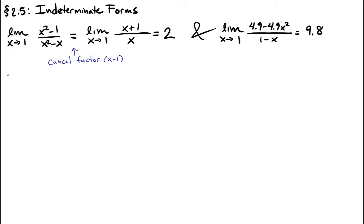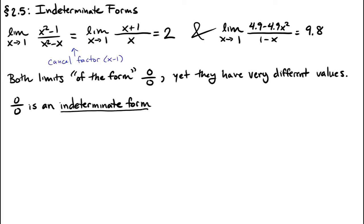Both of these two limits have that form 0 over 0, and yet they give us very different numbers. We say that 0 over 0 is an indeterminate form because we can't determine anything about the limit just from seeing this form. In this video set, we'll also investigate the indeterminate forms infinity over infinity, 0 times infinity, and infinity minus infinity.